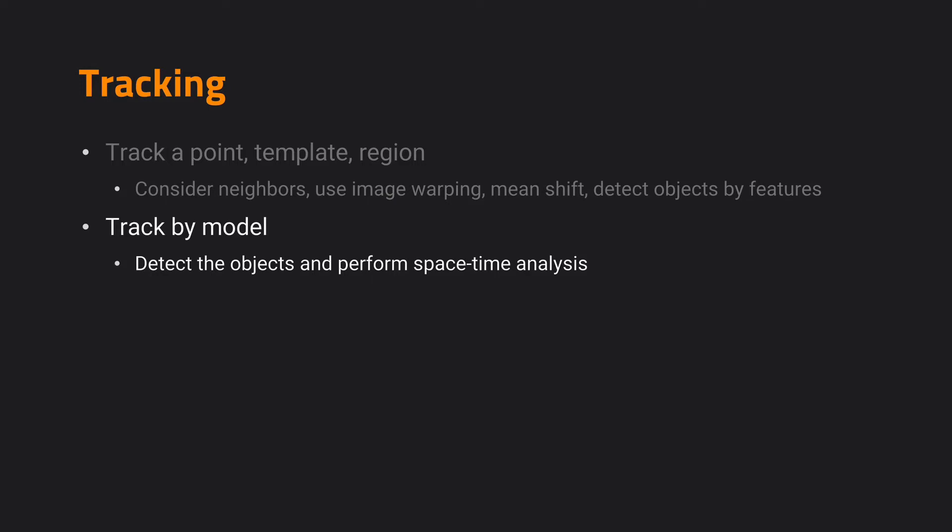So in summary, now we have discussed tracking by model. Basically, instead of knowing an exact object or template we want to track, we represent the target by a model. We first detect the objects in the video, and then perform space-time analysis and association to track the objects together.